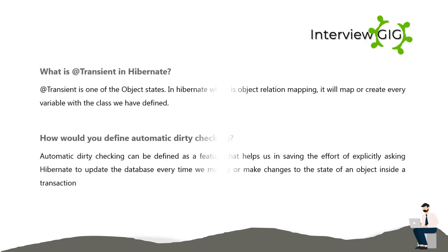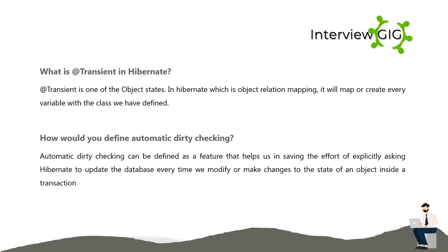What is a transient in Hibernate? A transient is one of the object states in Hibernate, which is an object relational mapping framework. It will map or create every variable with the class we have defined.